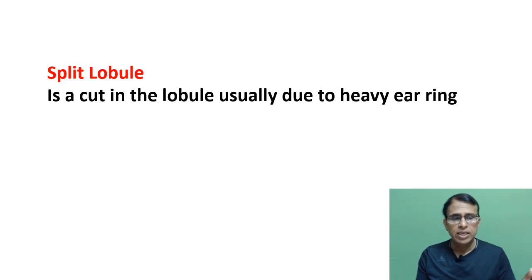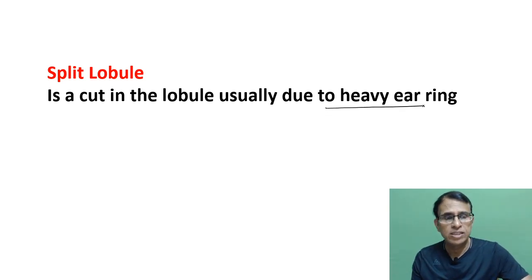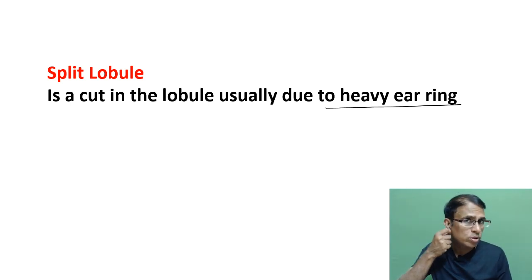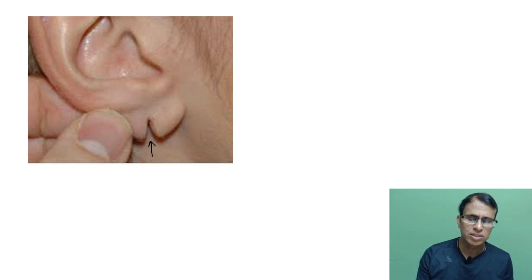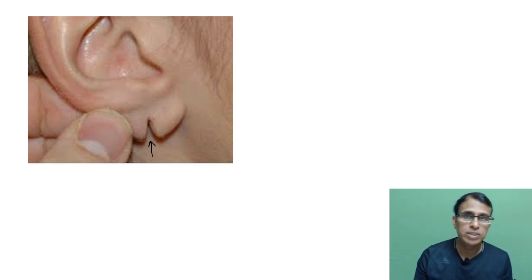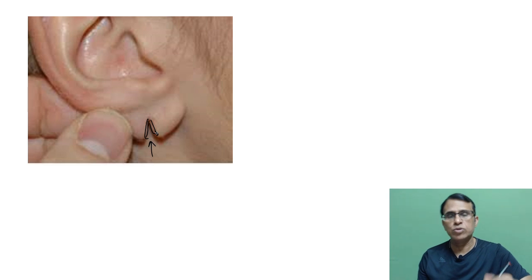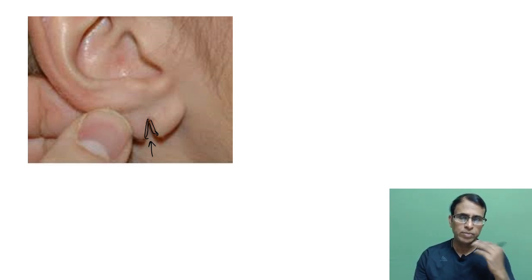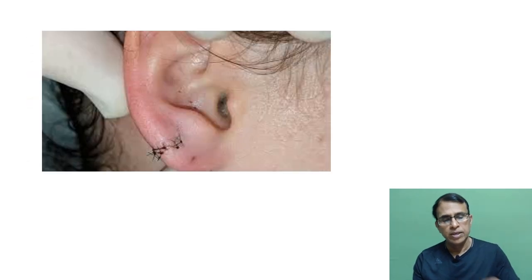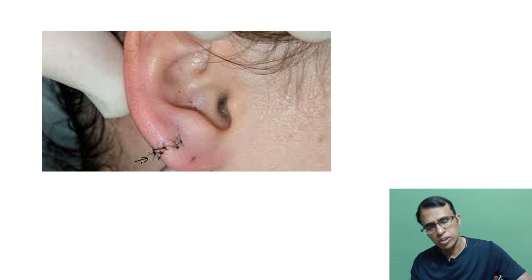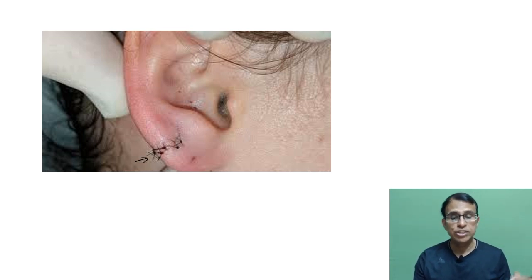Split lobule is a cosmetic problem — the patient cannot wear earrings. The treatment is simple surgery: remove the skin from the split area to make it raw, then stitch it up in three layers — lateral skin, medial skin, and the soft tissue (usually fat) in the center. The image shows the corrected split lobule after surgery.